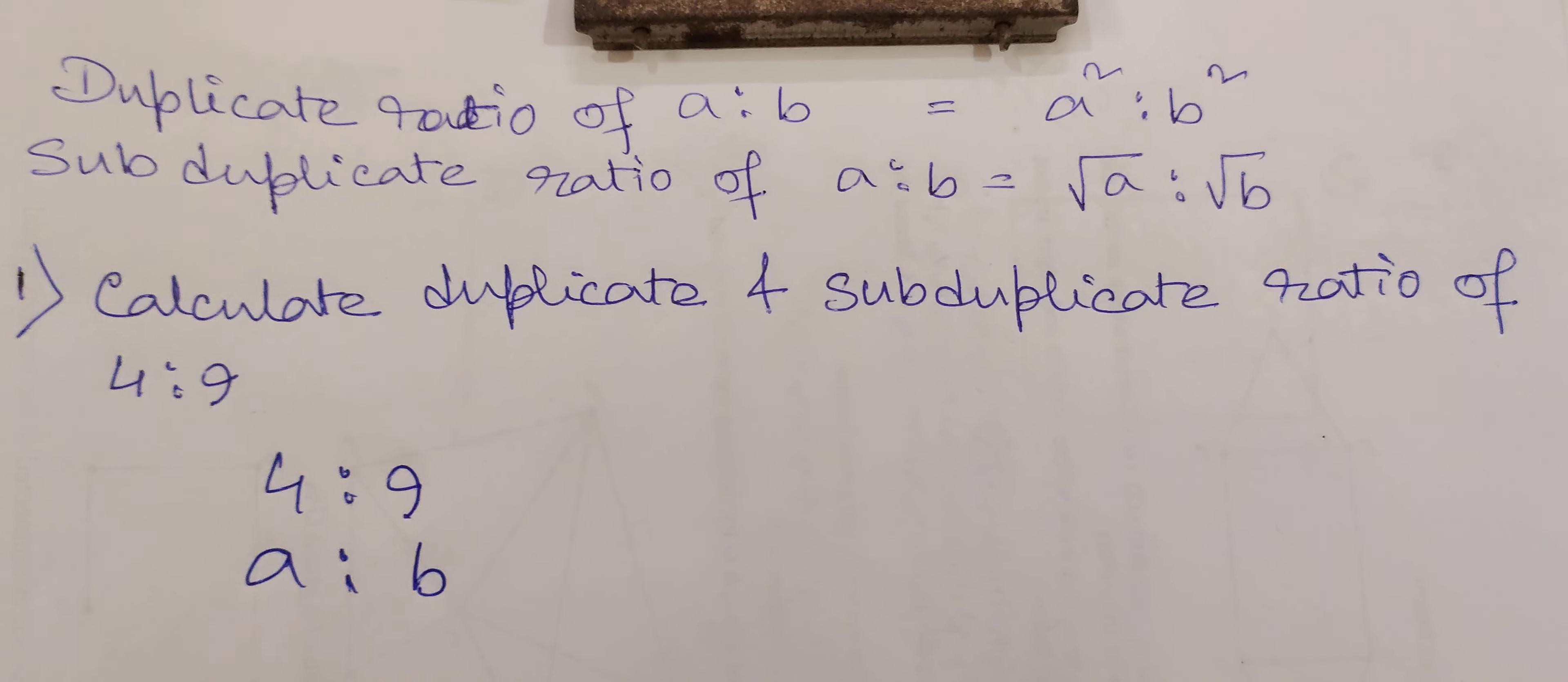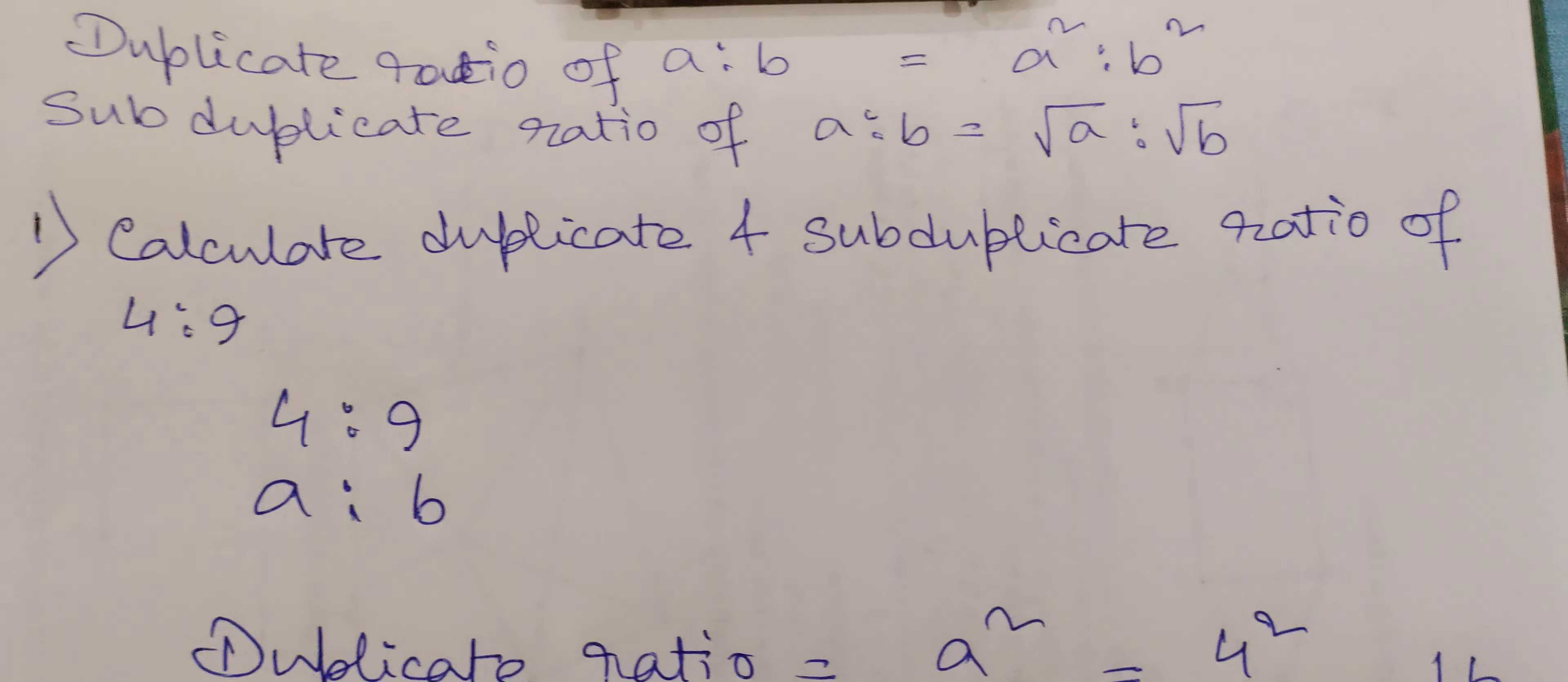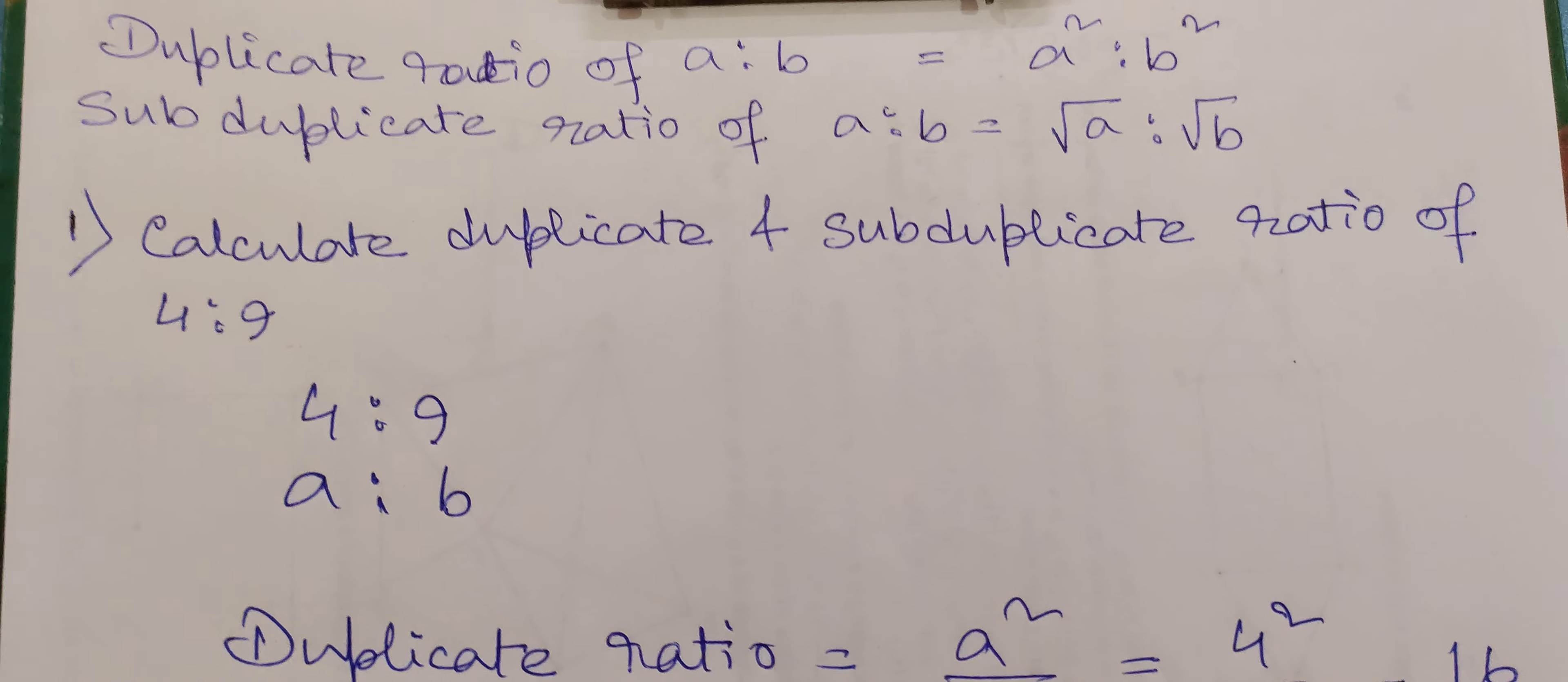So this is how we can find duplicate and subduplicate ratio of a given ratio a is to b. That's it, thank you.